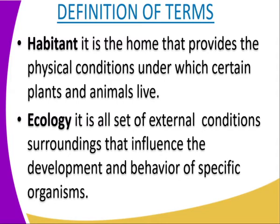We start by looking at other terms used in geography. The first one is the Arbitant. When we talk about the Arbitant, it is the home that provides the physical conditions under which a certain plant and animal live. Many plants and animals survive in different conditions. For example, there are those that can do well in arid and semi-arid areas, and there are those that can do well in tropical areas. So those are the ones we refer to as the Arbitant.